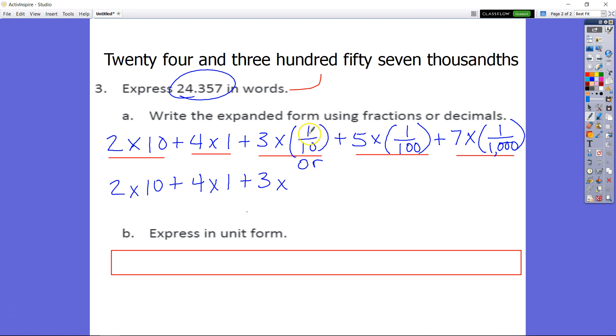And now 1/10, our fraction, is going to change to a decimal, which is going to be 0.1, plus 5 times 1/100, which is going to become 0.01.